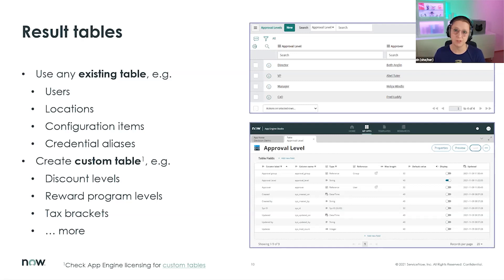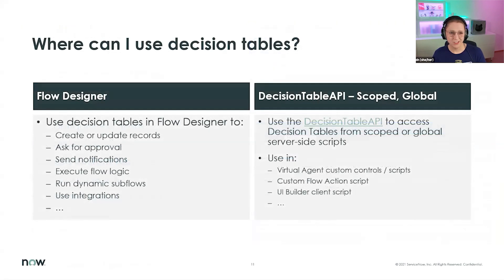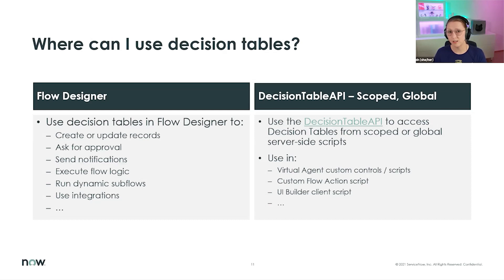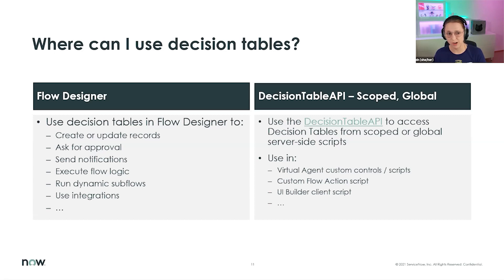Keep an eye out for what we share later about upcoming releases, where we'll introduce more options and variety for assigning results. Where can you use decision tables? Right now there are two main places. The default recommendation is Flow Designer — there's a flow logic called 'Make a Decision.' You can use decision tables in Flow Designer to create or update records, ask for approvals, or send notifications — basically any business logic you'd want in those decision branches.